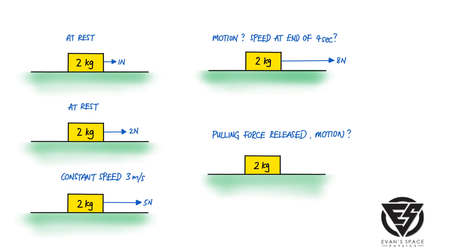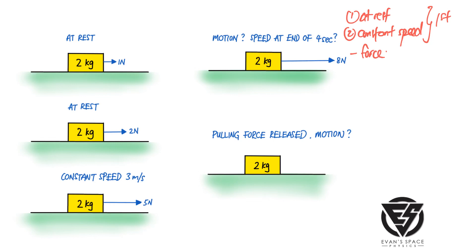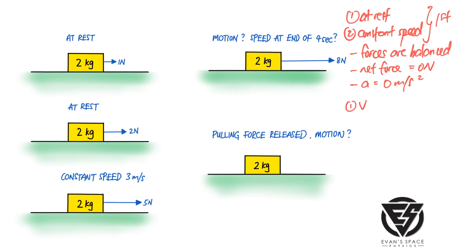Whenever an object is at rest, or if it's moving at constant speed in a straight line, this belongs to Newton's first law. There are three conditions: firstly, the forces acting on the body must be balanced; when that happens, the net force or resultant force acting on the object is zero; and there will be no acceleration experienced by the object.